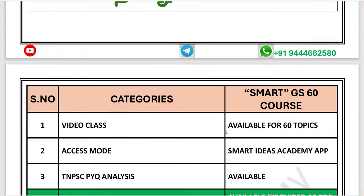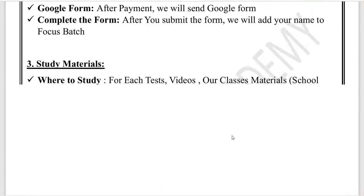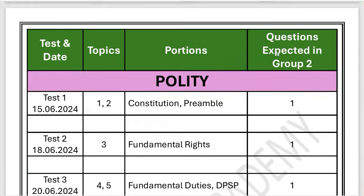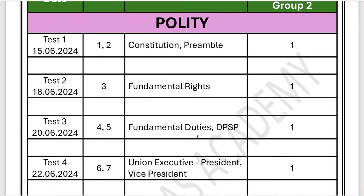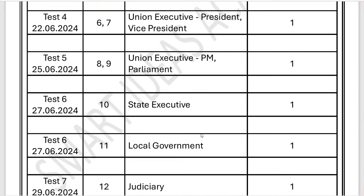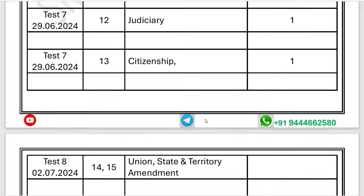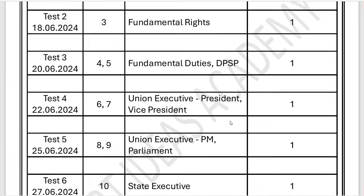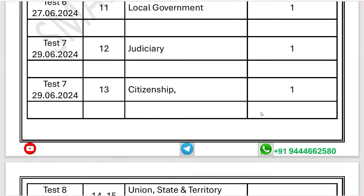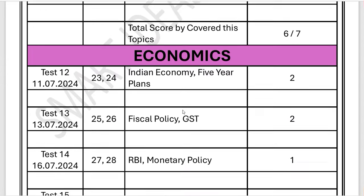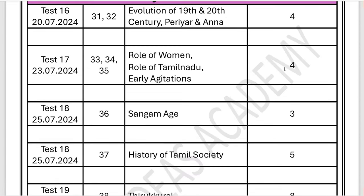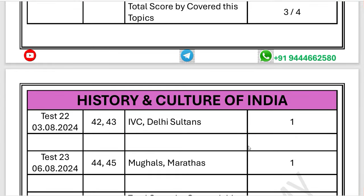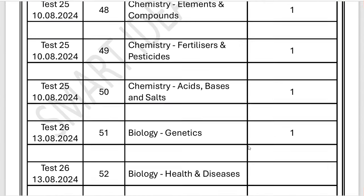The batch starts on June 15th. I have selected one topic for each group, and now we have 15 topics in total. You can select those topics. These include geography, economics, and unit aid.